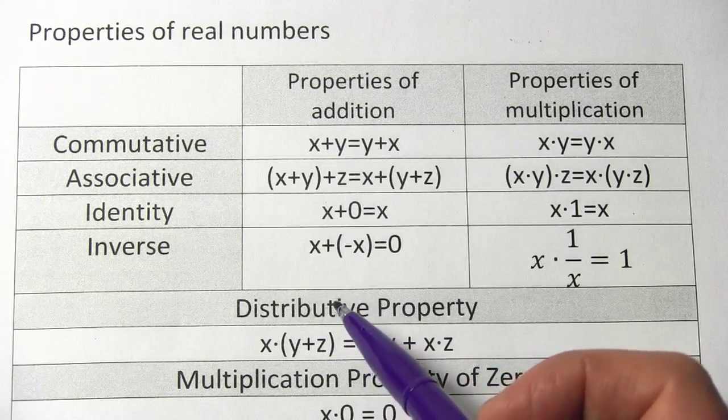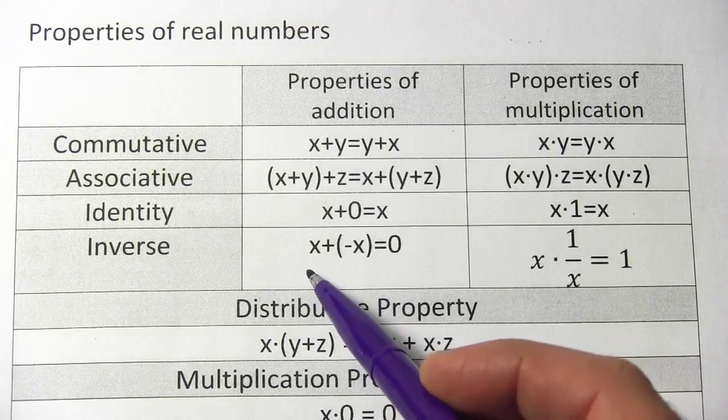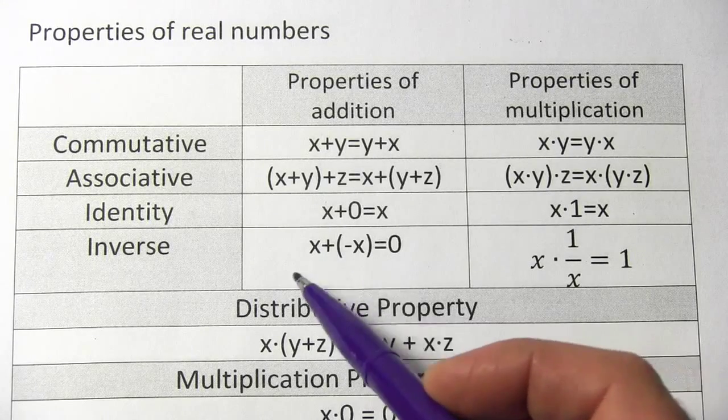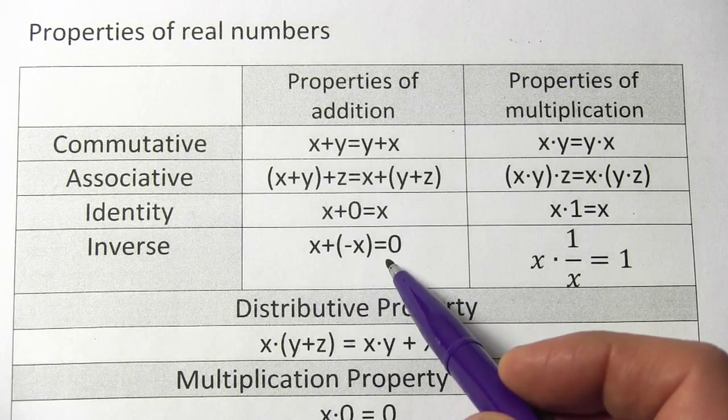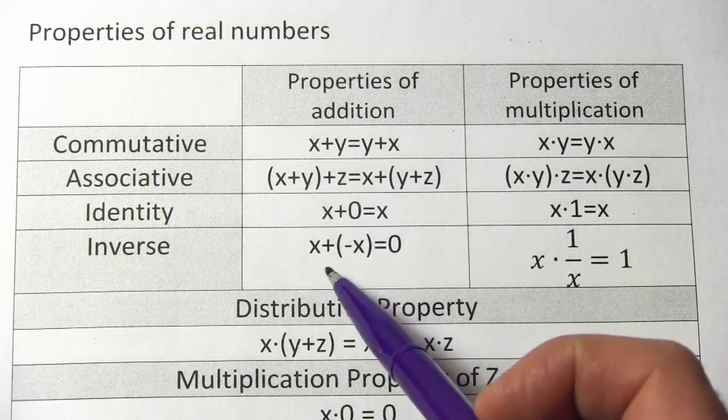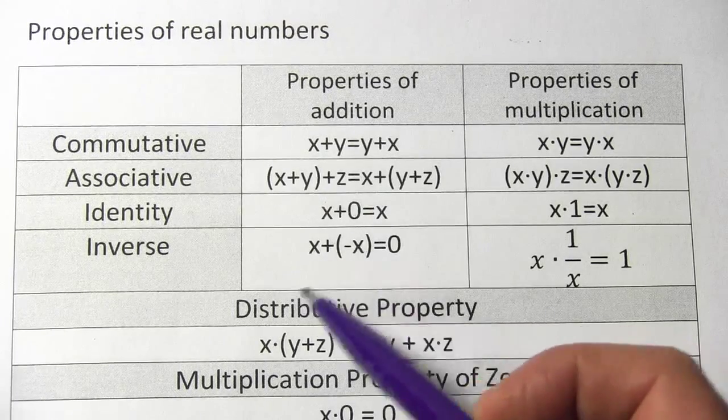And then there's the inverse property. In addition, that means if you add the negative of something to itself, you get zero. Negative x is the inverse of x in terms of addition.